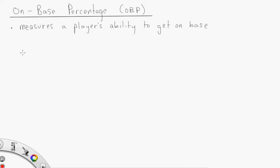On-base percentage in baseball is a measure of a player's ability to get on base. So let's look at the equation. OBP equals the number of hits plus the number of walks plus the number of times a batter is hit by a pitch.